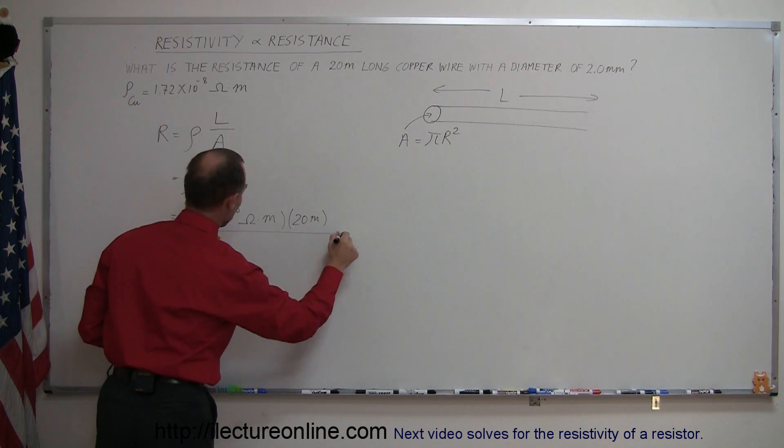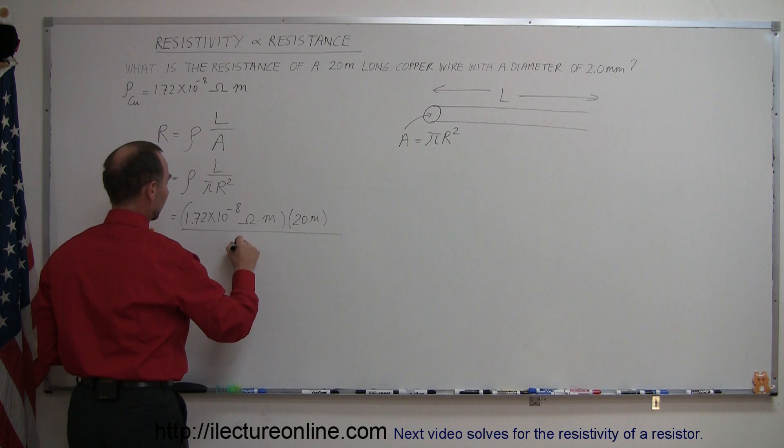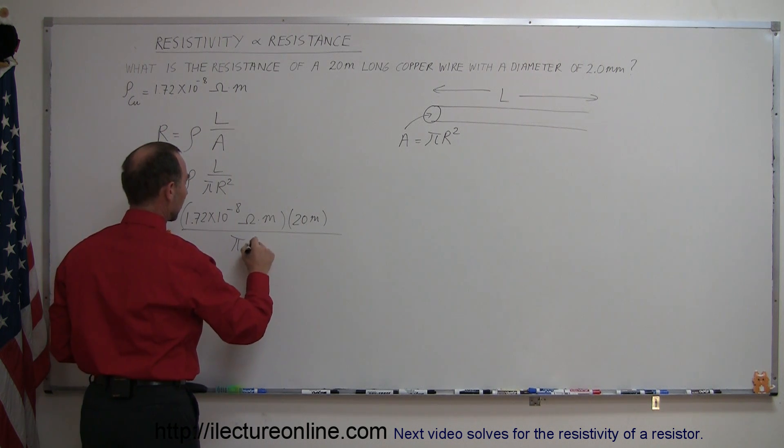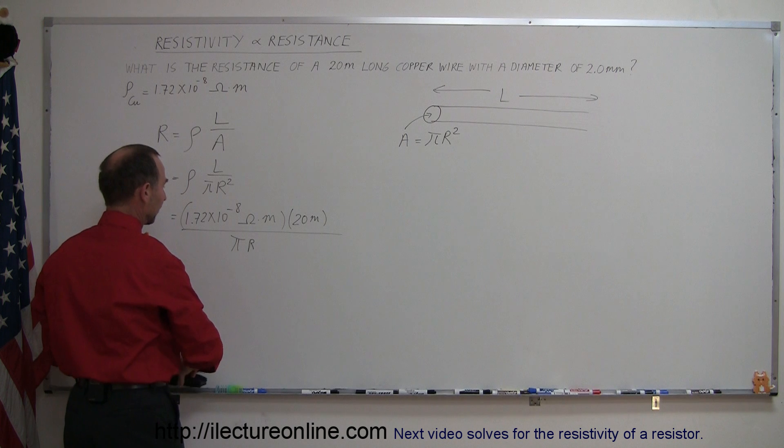And then divided by the cross-sectional area, which is πR². Let's plug in values for R.